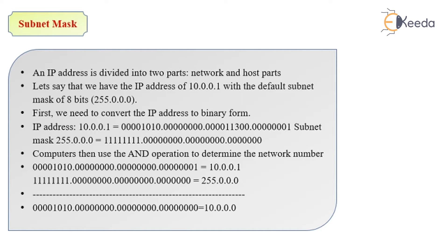Subnet mask. An IP address is divided into two parts, namely the network and the host part. Let us say if we have an IP address of 10.0.0.1 belonging to class A, so the default subnet mask is 255.0.0.0. We need to convert these two addresses in binary form. The conversion of the IP address gives this binary number, while the conversion of the subnet mask gives this binary number. We perform an AND operation on these two numbers, which finally gives us 10.0.0.0. So the subnet mask result for this IP address is 10.0.0.0, which we get by performing an AND operation on the given IP address and its subnet mask.